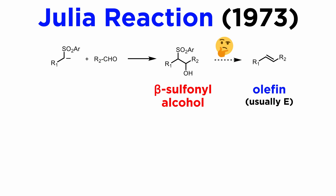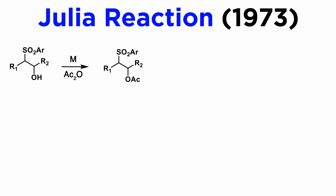Given this premise, we will spend the rest of the tutorial elucidating some of the different ways by which the beta-sulfonyl alcohol can be transformed into an olefin. In the original formulation of the reaction, the hydroxyl group is acylated, typically to the acetate, and the resulting beta-sulfonyl acetate is reduced to the olefin. Many reagents can be used.